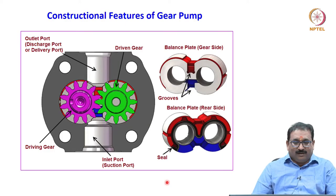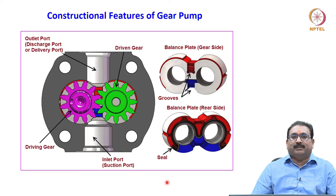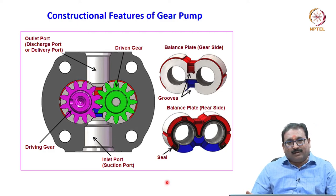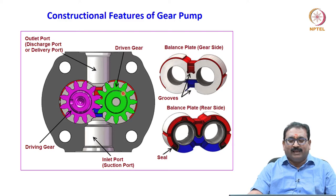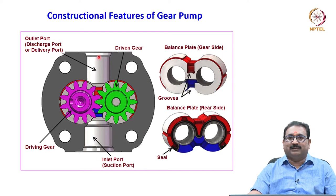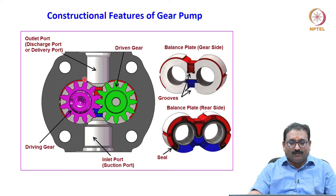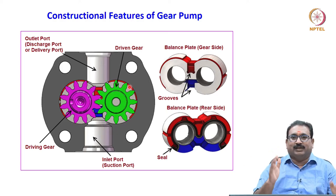Let us begin with the constructional features of the first and prime pump in hydraulics — the gear pump. Observe the figure, the cut section model of the gear pump. It consists of two gears enclosed in the housing. There is an inlet port and an outlet port. Please observe the clearance between the gear and the housing — it is very, very small. There is a balance plate on the gear side and rear side.